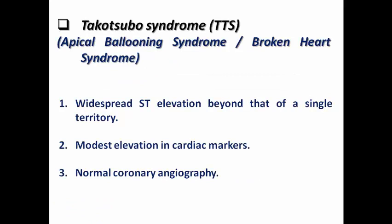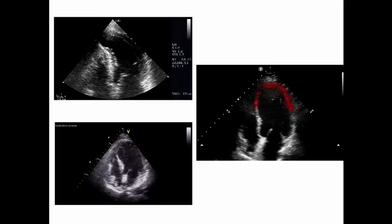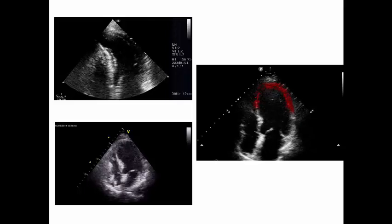Takotsubo syndrome — also called Apical Ballooning Syndrome or Broken Heart Syndrome — is characterized by widespread ST elevation beyond a single vascular territory, caused by a catecholamine surge in a stressful situation leading to myocardial dysfunction without respecting vascular territories, similar to myocarditis. It shows modest elevation in cardiac markers disproportionate to the extent of ST elevation — there is discrepancy between the magnitude of ST elevation and the modest marker elevation. Coronary angiography is normal. Ventriculography shows severe affection of the apical segment giving the octopus appearance explaining the name Takotsubo and the apical ballooning appearance. Echocardiography shows severe hypokinesia or akinesia of the apical segment with preserved or sometimes hypokinetic basal segments.